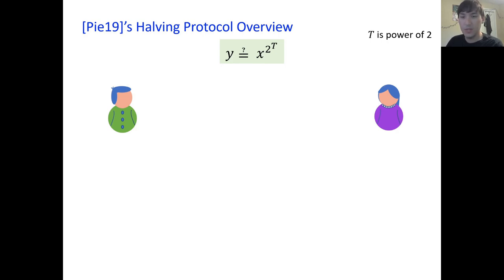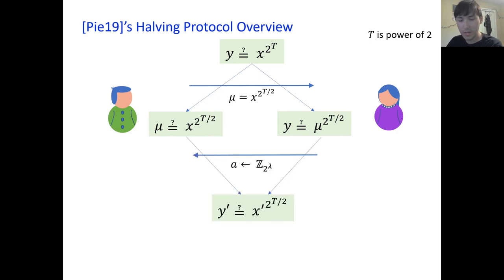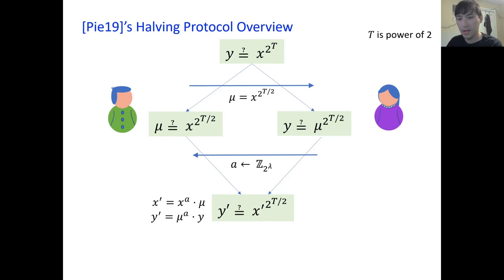The halving protocol splits the computation of X to the 2 to the T in half by first computing mu — which is X to the 2 to the T over 2 — and having the prover send it. If mu is computed correctly, then Y is equal to mu to the 2 to the T over 2, so the power is split in half. Then a random linear combination is sampled by the verifier, and X prime and Y prime are computed via this random linear combination. If mu is computed correctly, then Y prime is in fact X prime to the 2 to the T over 2. So we go from an exponent of size T to an exponent of size T over 2.